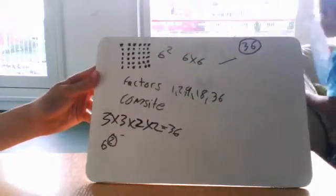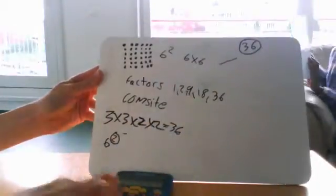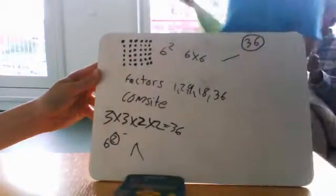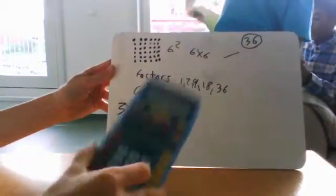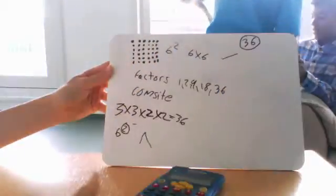Exponent on a calculator would look like that. It would look like this. So if I do 6 exponent 2 and then I click enter, it will equal 36.